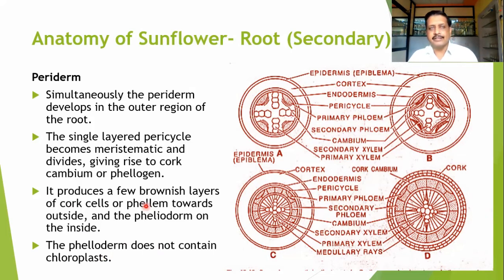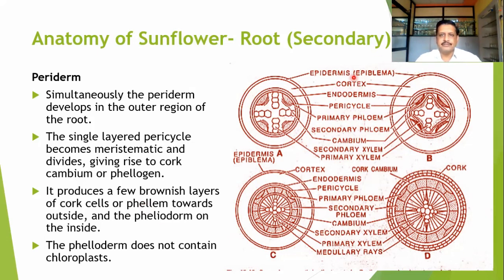The root has a secondary structure as it is underground. The phelloderm does not contain any chloroplast. Looking at the structure of this root, we can see how it has been modified from the primary to the secondary structure. In the primary structure, we find meta-xylem and proto-xylem elements alternating with the phloem patches. Now these phloem patches are converted, and the cambium ring has been formed.